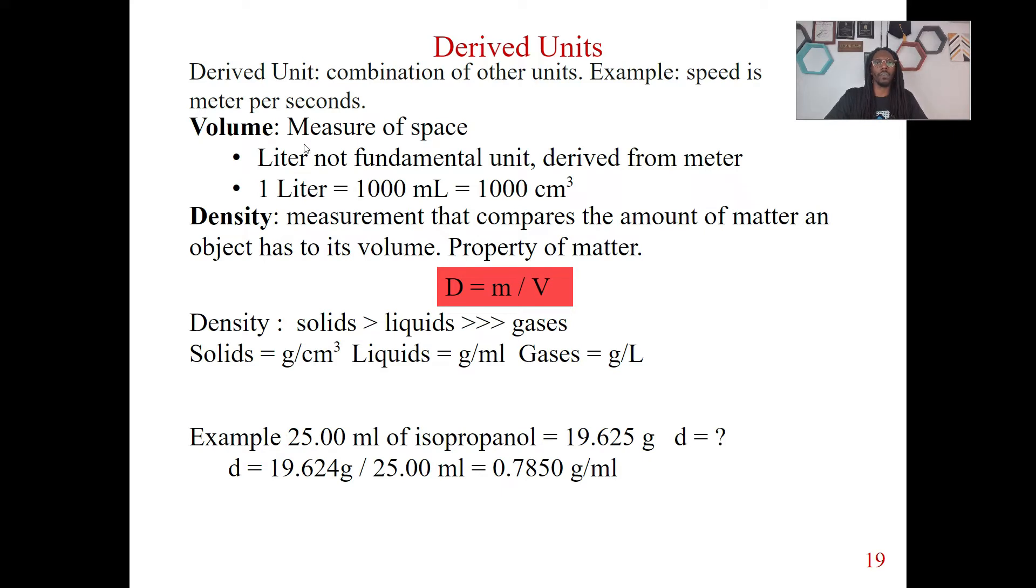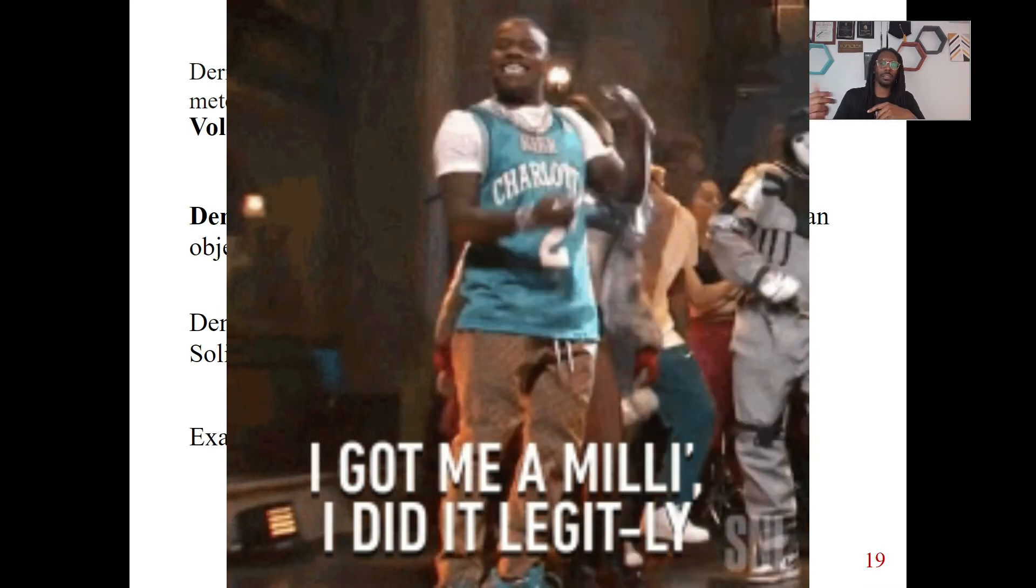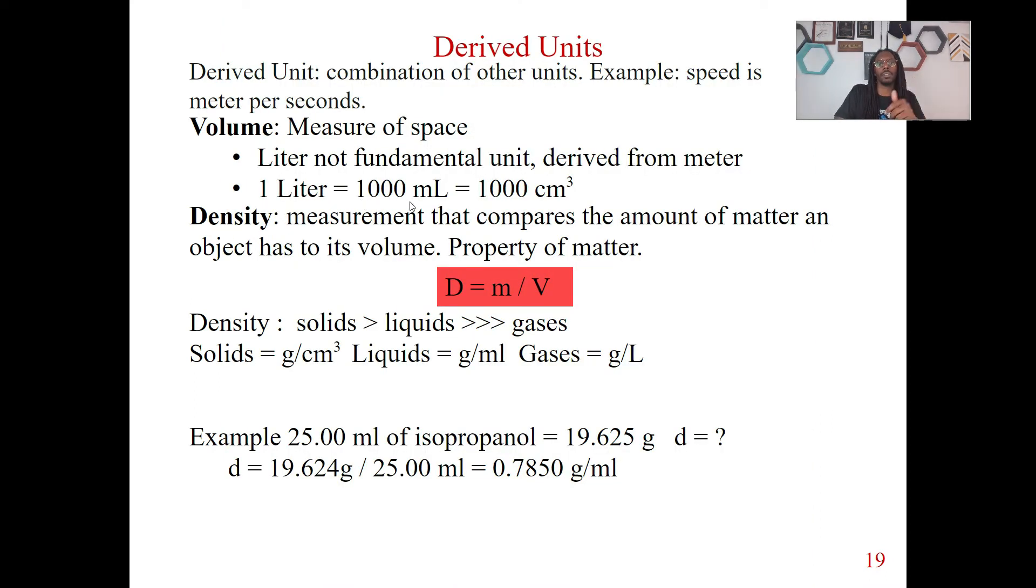I want to talk about volume. So volume, as we mentioned earlier before, is the measure of space. Now, I just want to mention about liters. So liters is actually not a fundamental unit. Did you guys know that liters are derived from meters? So if liters are derived from meters, that's going to impact how we think about certain things. So because liters are derived from meters, one liter can be converted to 1000 milliliters. Think about that prefix milli-thousand. One liter can be converted to 1000 milliliters.